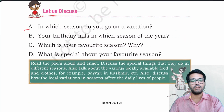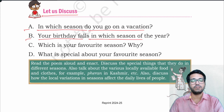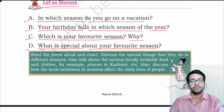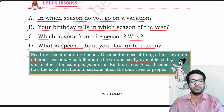Let us discuss. A: In which season of the year? C: Which is your favorite season and why? D: What is special about your favorite season? Read the poem aloud and enact. Discuss the special things done in different seasons. Also talk about the various locally available food and clothes — for example, Pheran in Kashmir. Discuss how local variations in season affect the daily lives of people. This is a note to the teacher.